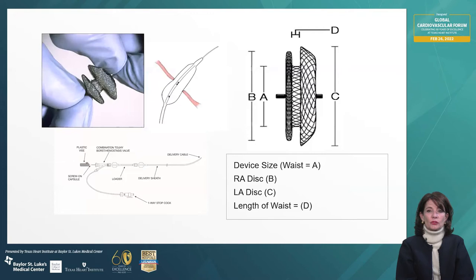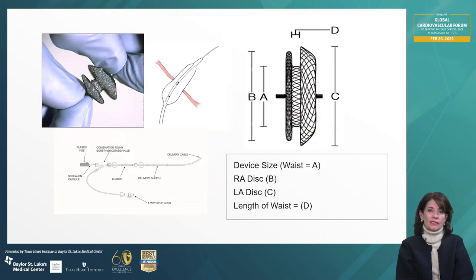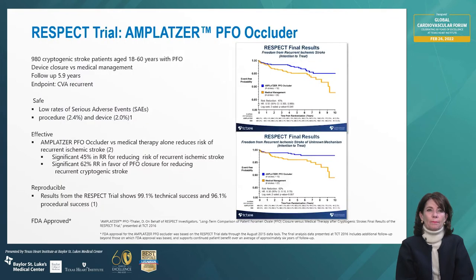The closure device that is most useful and most utilized is the Amplatzer device, which is essentially two discs. The measurements are shown on the right and the delivery catheter system is on the bottom left. It can be easily deployed from venous access. This is the RESPECT trial, which provided the proof that closure of a PFO or small ASD benefited patients who had a cryptogenic stroke.